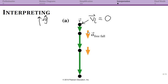So this object starts from rest at the top and falls downward. We don't know what happens after the shown portion — perhaps it hits the ground, perhaps it continues to fall — but we're only interested in this portion of the motion. Please don't extrapolate beyond what you're shown, since we don't actually know what happens after that point.